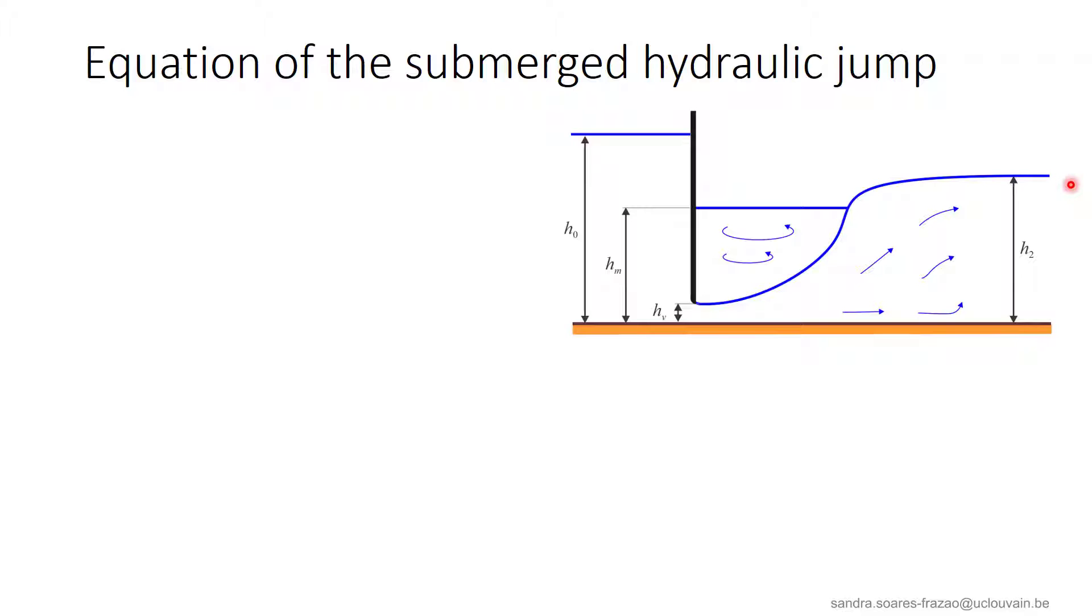However, unlike the classical hydraulic jump, we don't have one single depth of interest at the upstream side. Here, we have the depth HV that corresponds to the gate opening and the depth HM of the roller area.